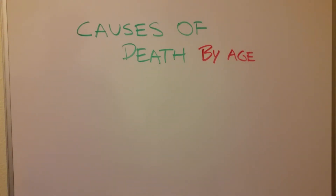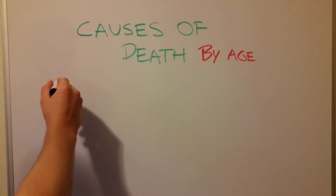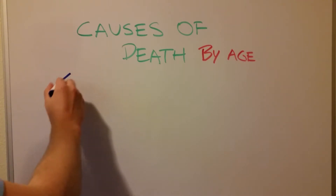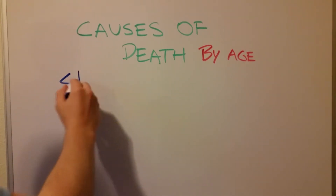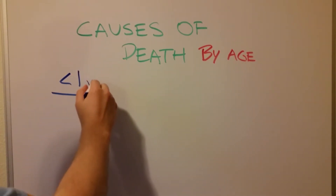We're going to break it down and make it super easy for you. There are four causes of death you need to know by age, and this actually makes a lot of sense if you think about it. The first one is younger than one year old — these are youngsters.